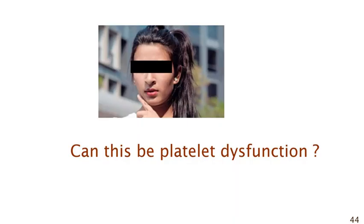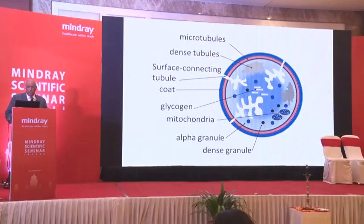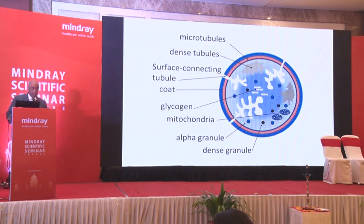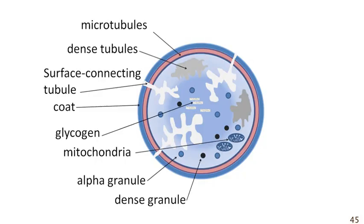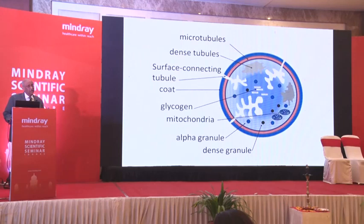Is it that she has enough platelets but those platelets are not functional? A platelet, though a small innocuous little cell in the peripheral blood, has a very complicated ultrastructure — microtubules, dense tubules, surface connecting tubules, proteins, glycogen, mitochondria, alpha granules, and dense granules. Based on that, there are various types of genetic and acquired platelet function disorders.